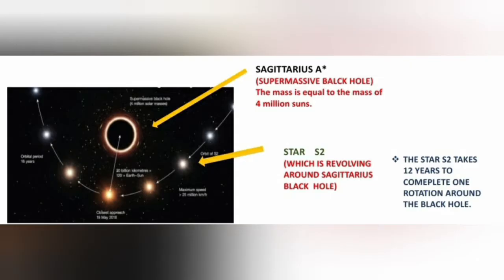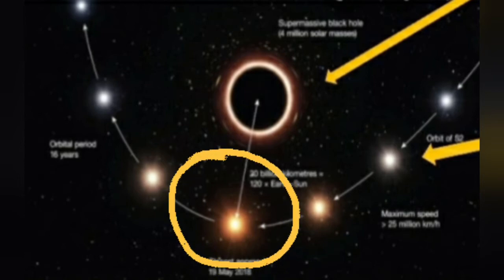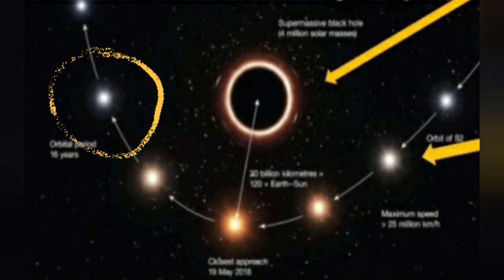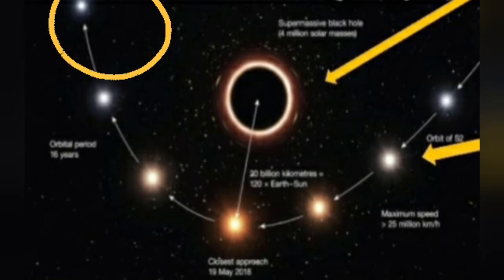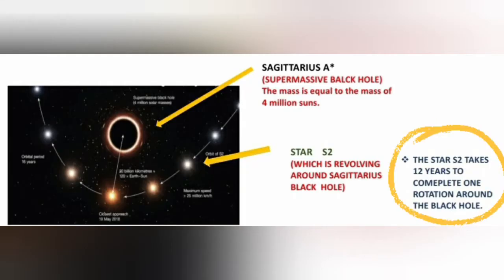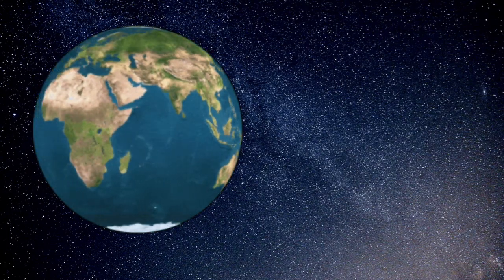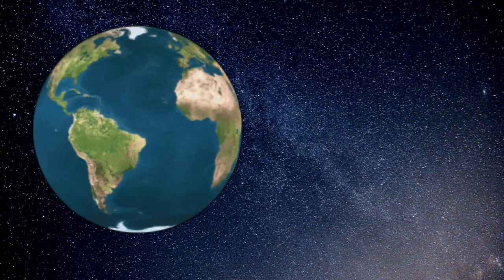How do we observe this? There is a star called S2. It has an orbital shape around the black hole. This is a bright star with a dim glow, and its orbital path around the black hole is the evidence.